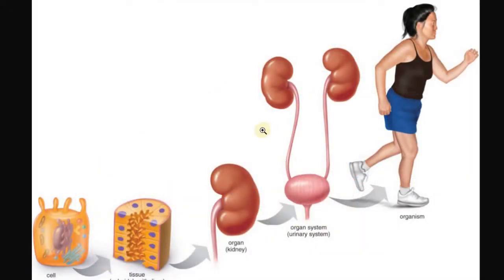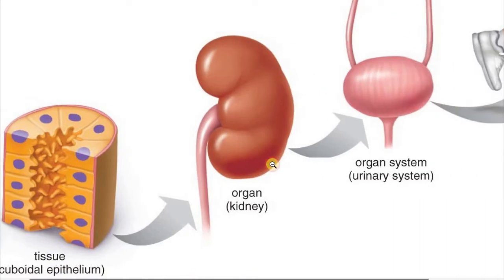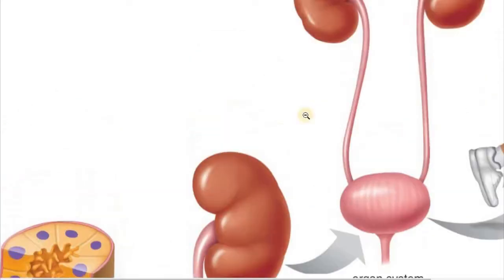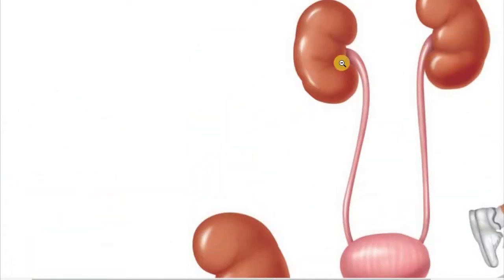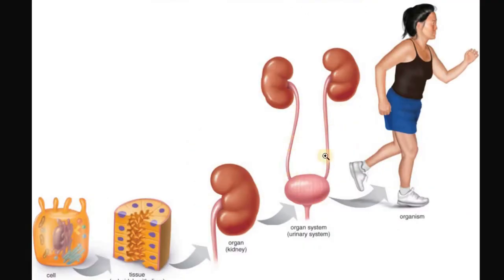We have the same for humans. We begin with a cell. A group of these cells makes this tissue. Some tissues make an organ — in this case a kidney. A group of organs — two kidneys, ureters, bladder, urethra — make the urinary system. And different systems make the organism: a human being.